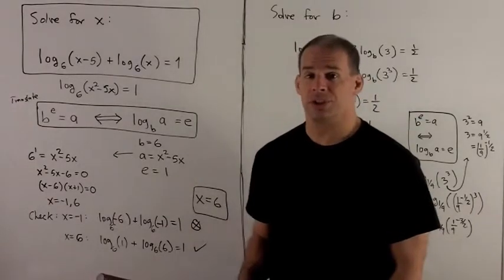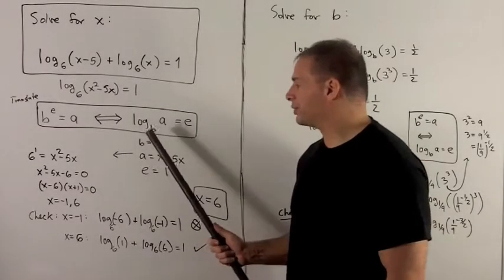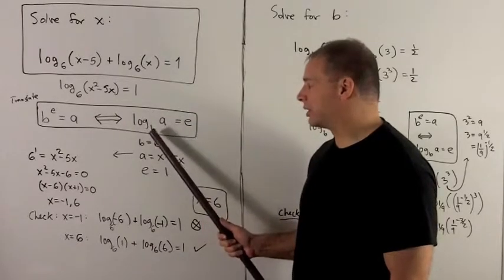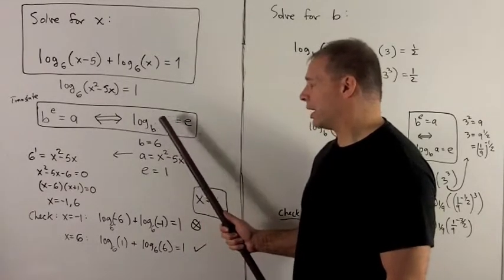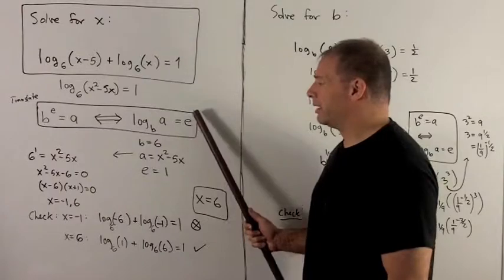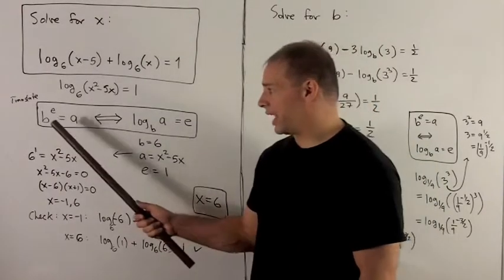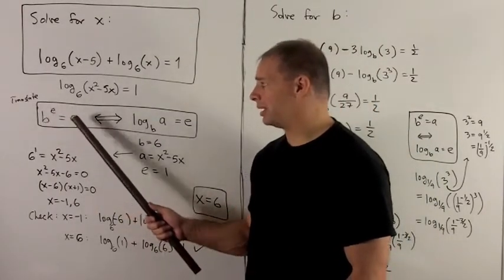This we just need to translate. The translation is: if I've logged to a base of an answer, what comes out is the exponent. If I rewrite that, that's the same as saying base to the exponent equals my answer.